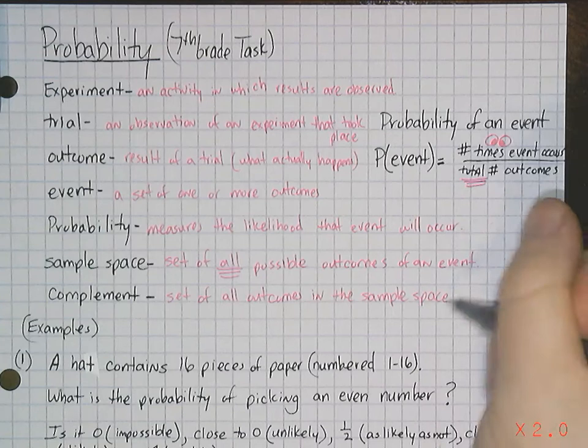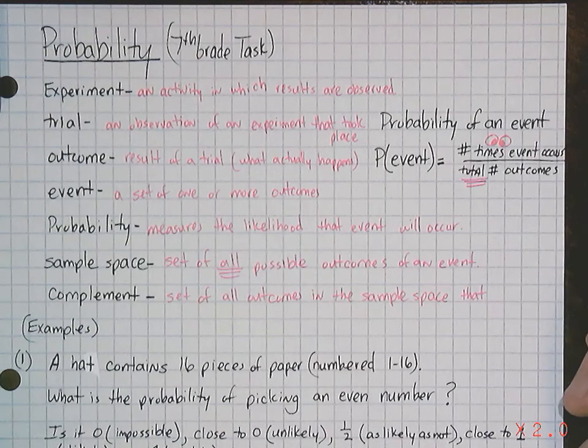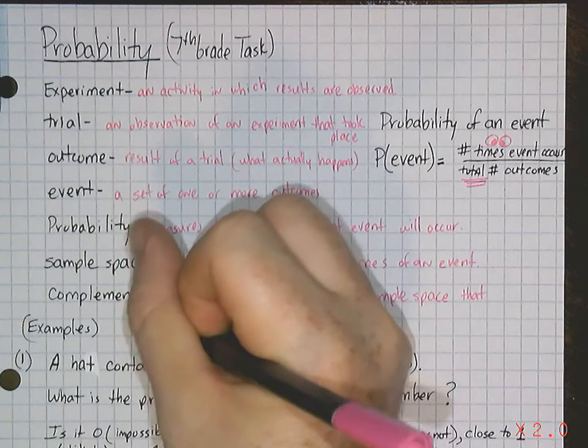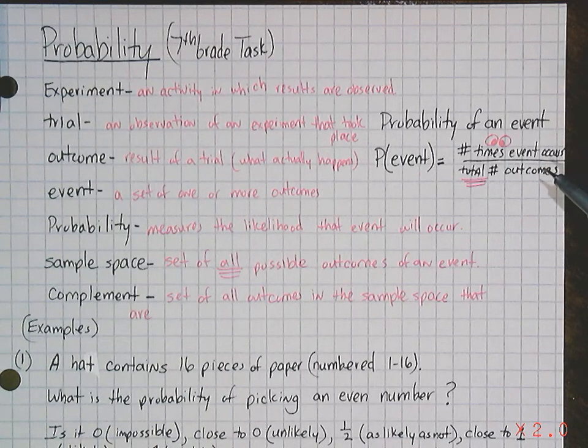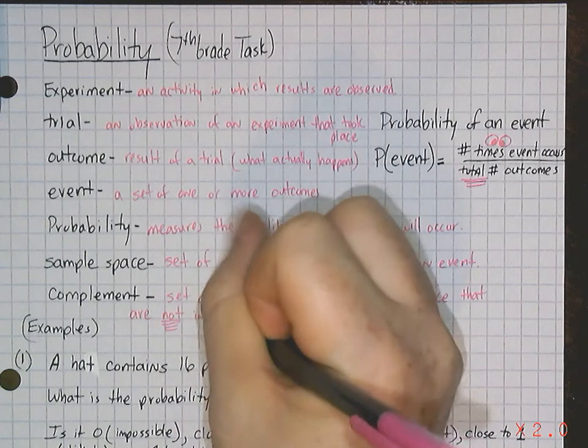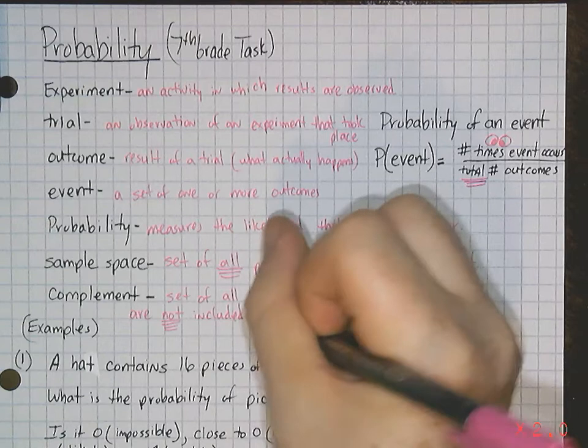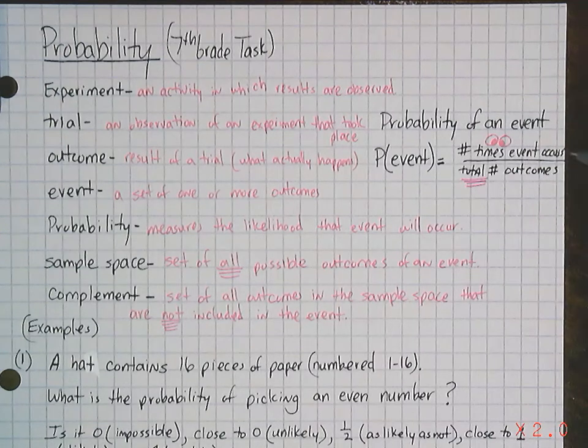And I'm spending a lot of time on these definitions, only because if you don't understand the concept of what probability is asking, then you'll have a hard time understanding every time I refer back to these terms. You have to understand what the words mean in order to use the language. That are not included in the event. And this is the event that you're looking for, the event that you want to occur.